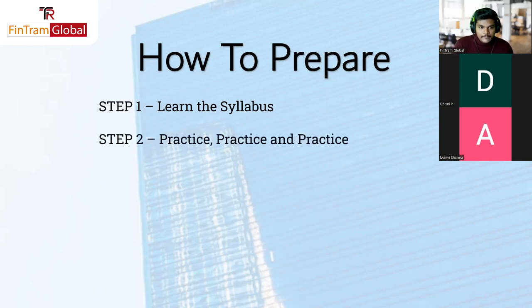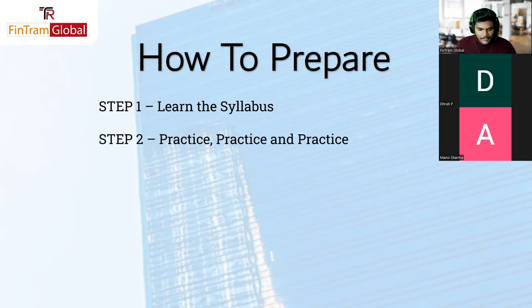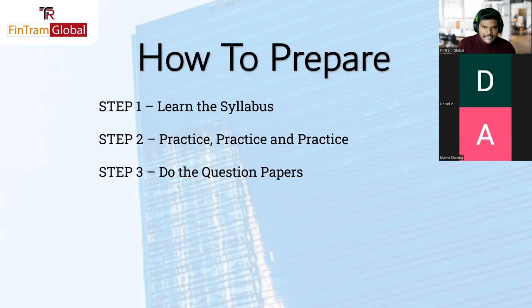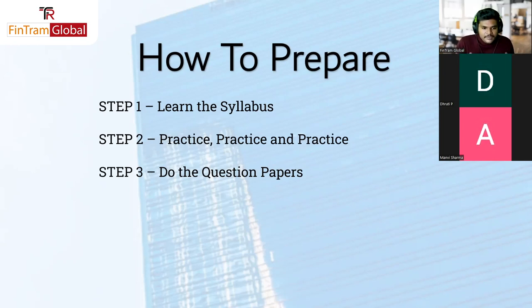Step three is doing past paper questions available on ACCA's website, including through the CBE environment's past paper library — these are really beneficial resources. Step four is reading the examiner's report, which conveys what the examiner expects — the points to include, the professional skills demonstrated by strong candidates, and what poor candidates did wrong — so you know how to improve your answers.